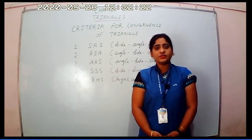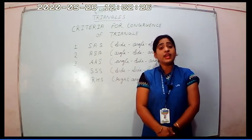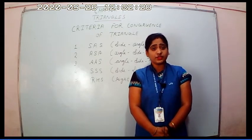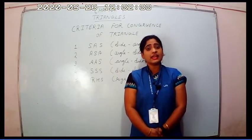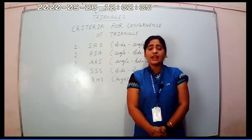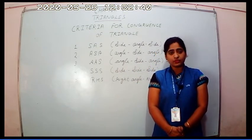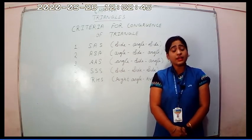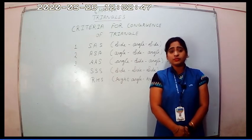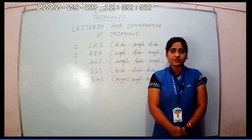Hello dear students, today we will continue the same topic triangles which we discussed in the last video. In the last video we discussed about triangle, their introduction, classifications of triangle and what is congruent triangle. Now today we will continue the congruence of triangle. Here are some criterias related to the congruent triangles. There are 5 criterias, and with the help of these criteria we will prove the 2 triangles are congruent. Now I will show you some slides related to these 5 criterias.